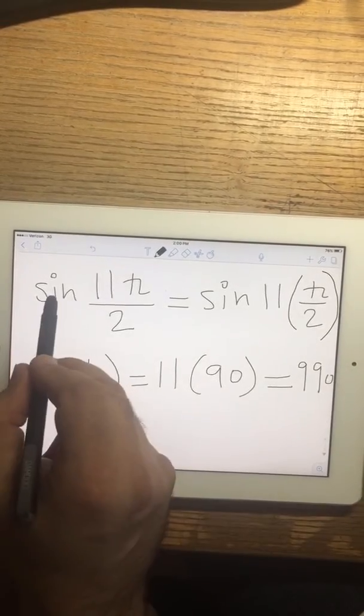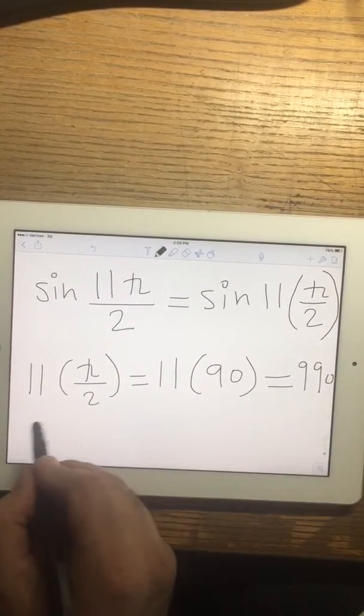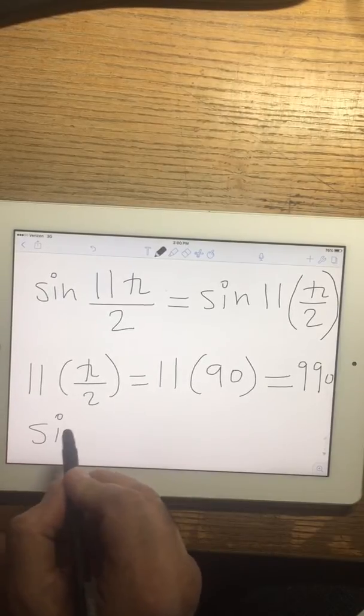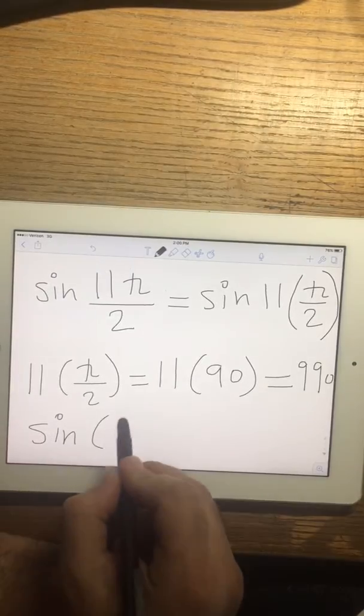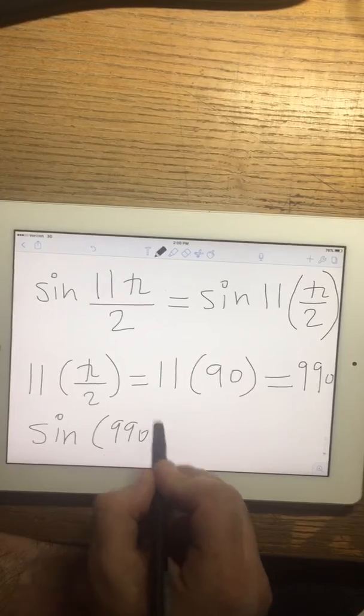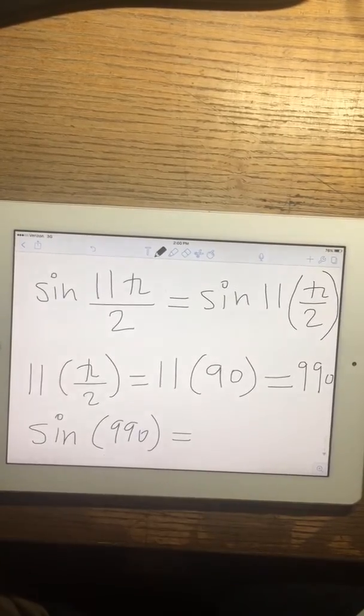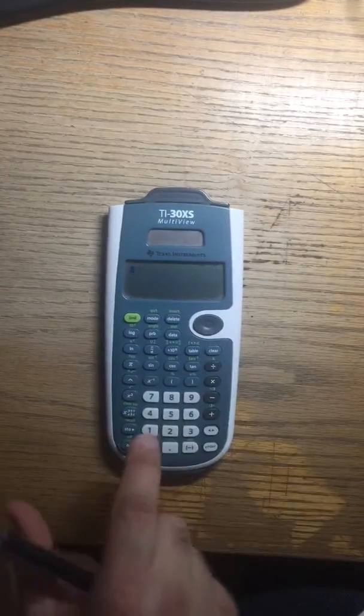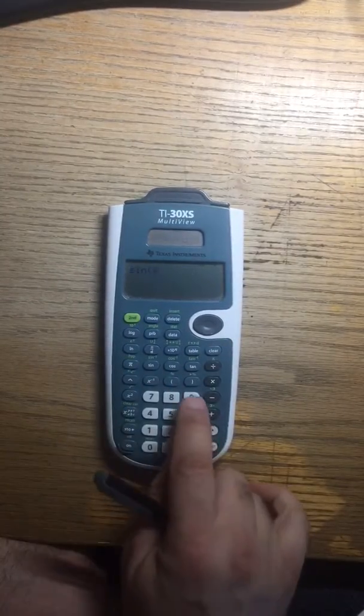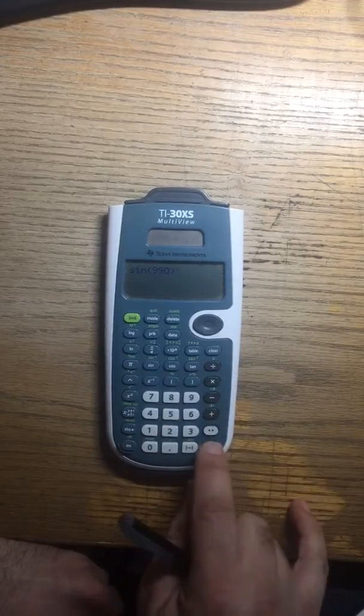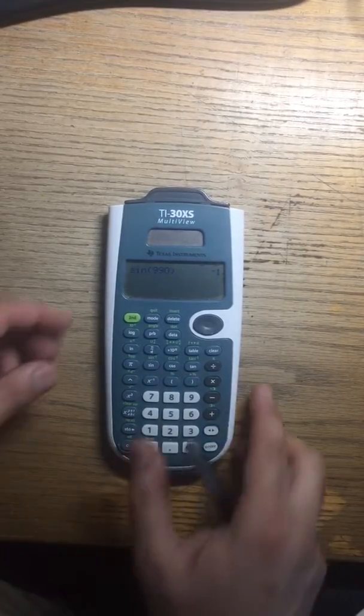Now I'm going to do sine of that number. So sine of 990 degrees. The sine of 990 gives me negative 1.